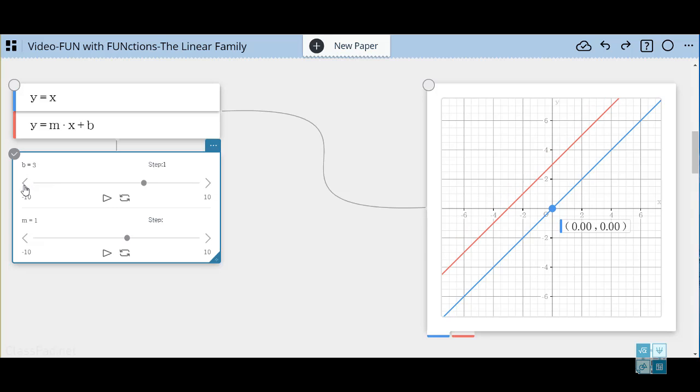If we go in the other direction, we are shifting the graph down. So we have a vertical translation or shift of the parent function Y equals X. Let's set it back to 0 so the red line overlaps the blue line.